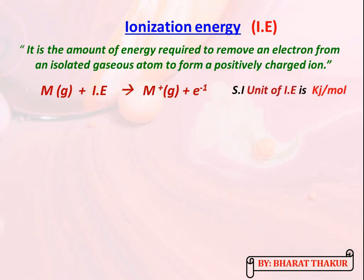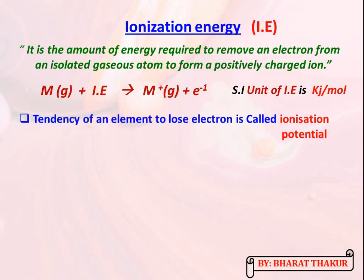The SI unit of ionization energy is kilojoules per mole. The tendency of an element to lose an electron is called ionization potential, so ionization energy is also called ionization potential.